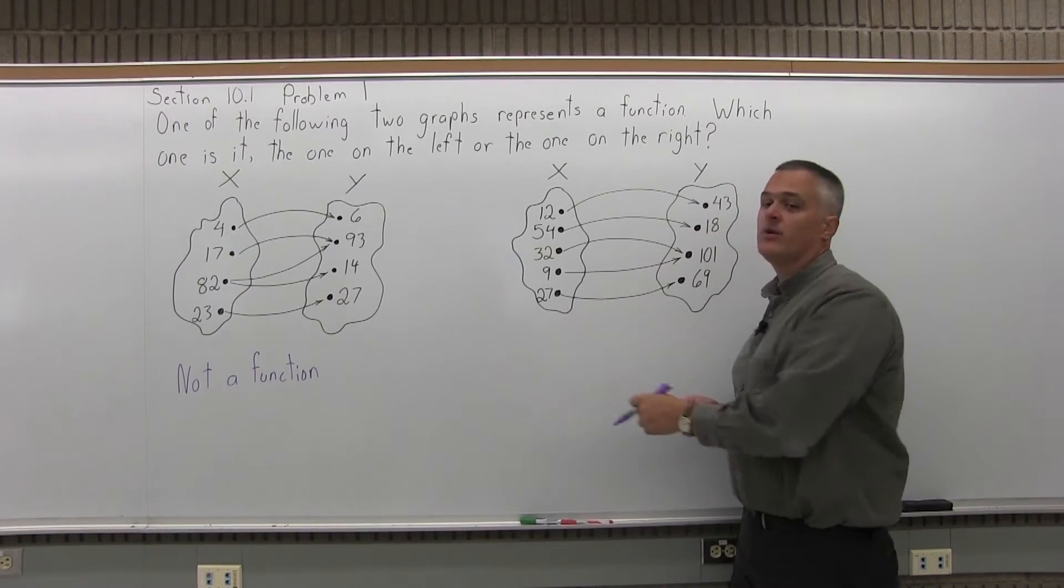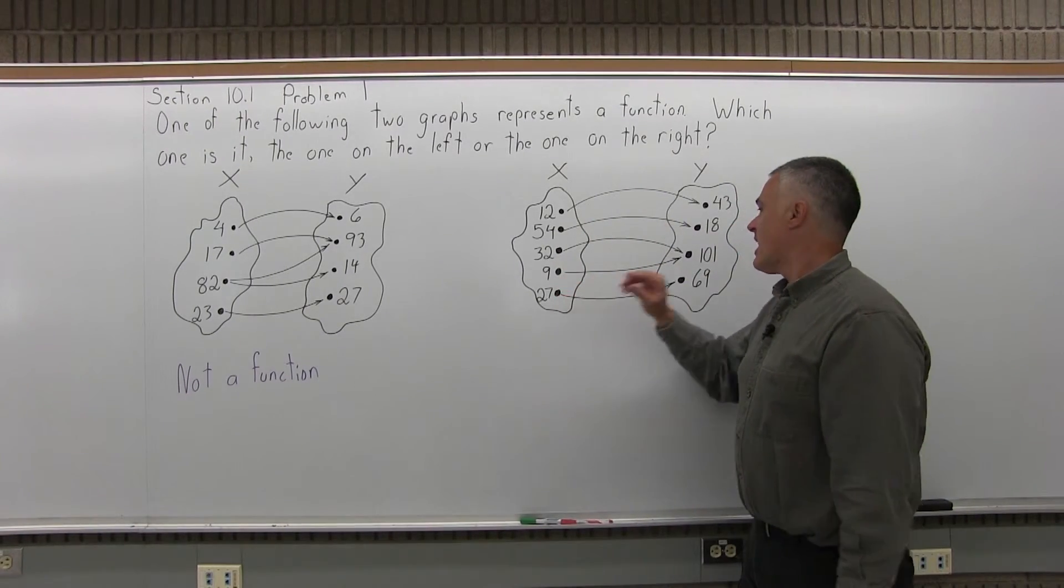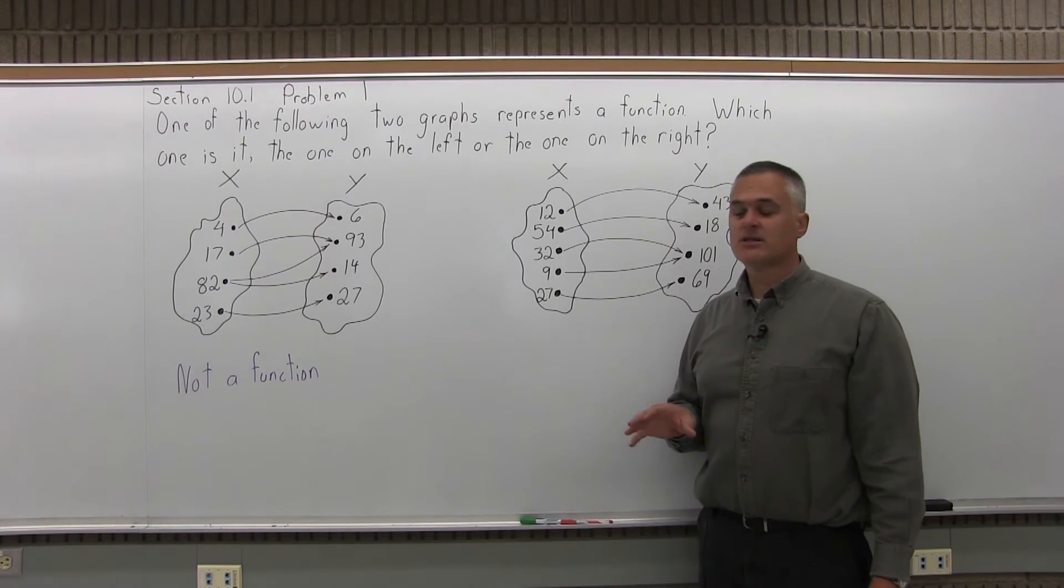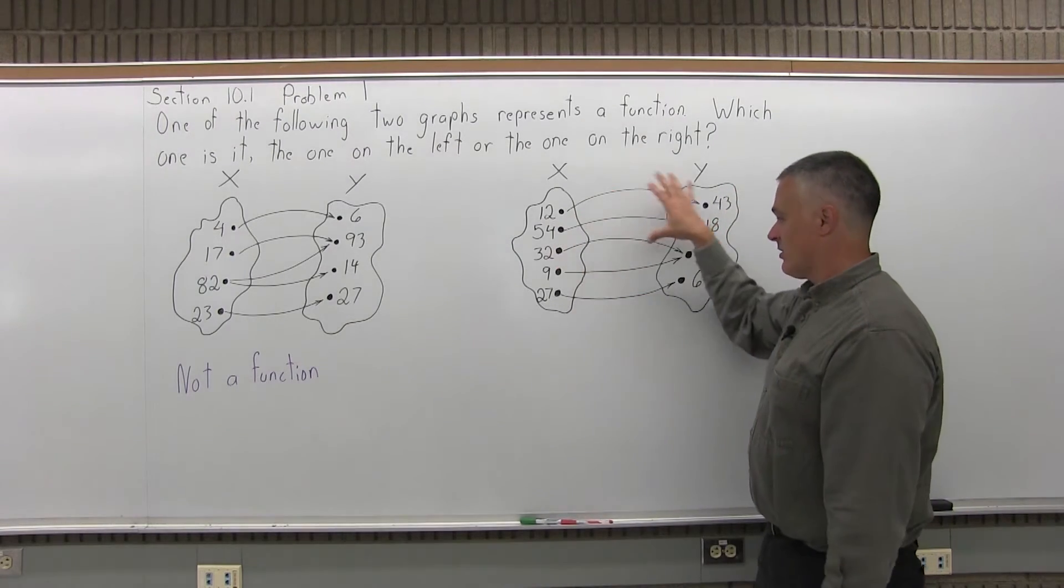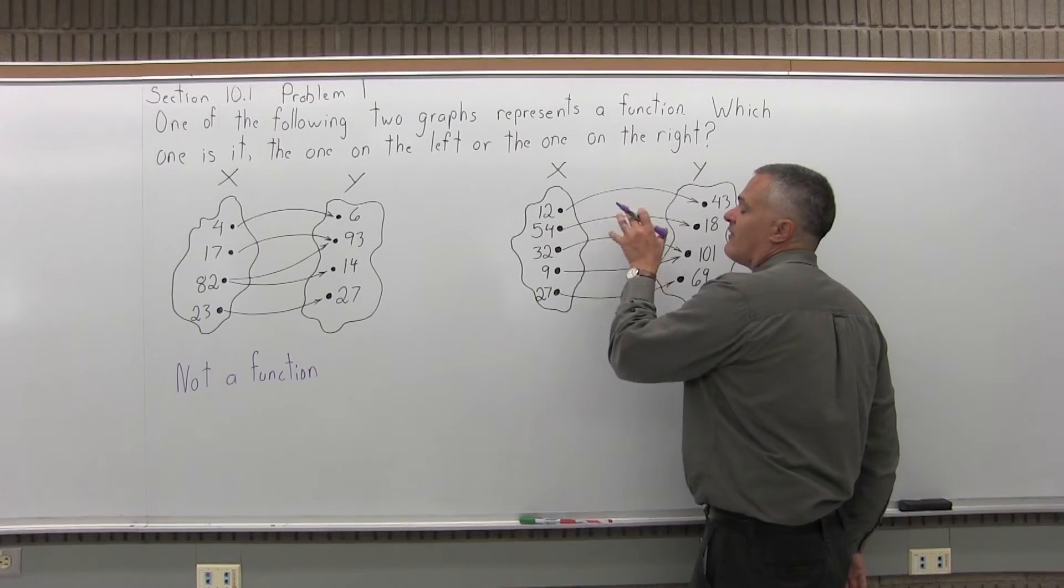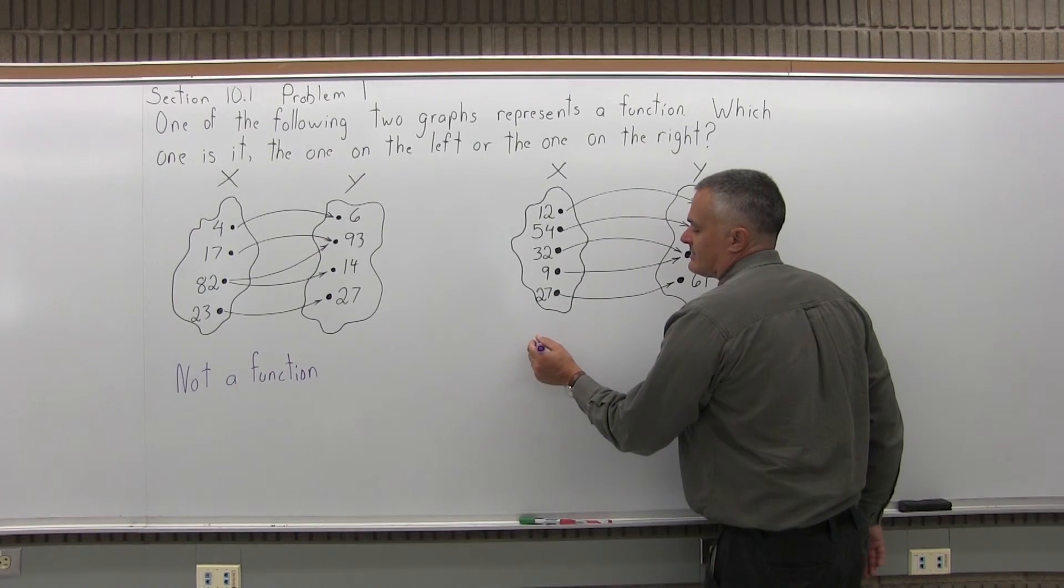If you put in a 32, only one thing comes out. And if you put in a 9, only one thing comes out. That's all right. That's not a problem. And every other thing only goes to one thing. So the graph on the right is a function.